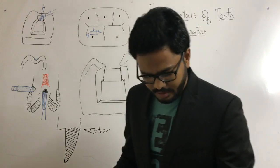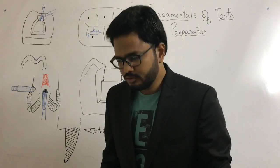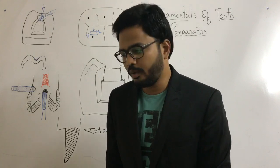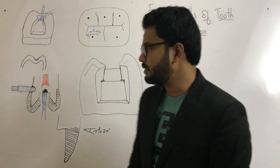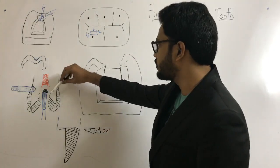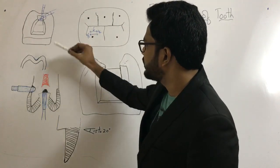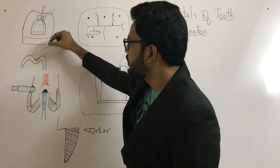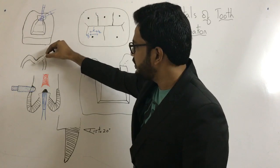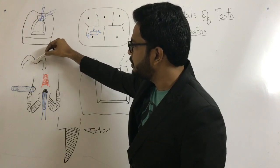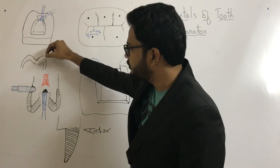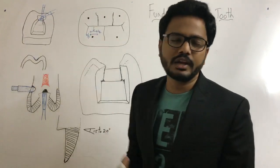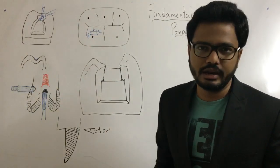Pulpal depth has to be 0.2 to 0.5 mm into dentin from the DEJ occlusally. For example, if you consider the DEJ, the depth of the cavity has to be 0.2 to 0.5 mm into dentin from DEJ occlusally. Whereas axial depth has to be 0.5 mm into dentin.